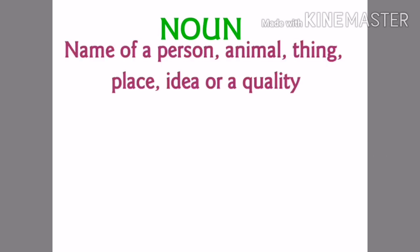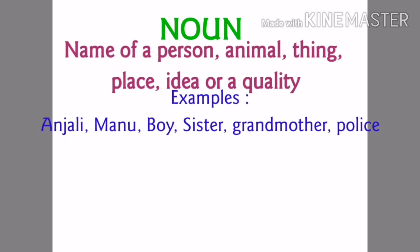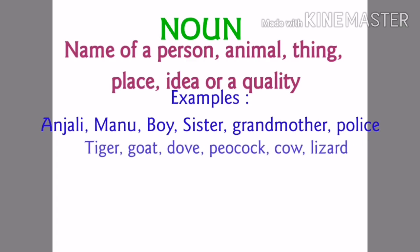What is a noun? Noun is the name of a person, animal, thing, place, idea or a quality. For example, Anjali, Manu, Boy, Sister, Grandmother, Police, etc. are the names which we give for a person.